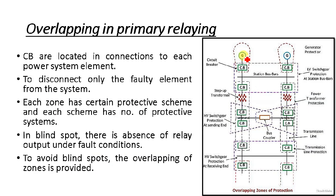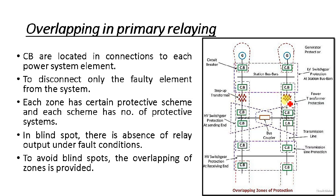Now let us discuss overlapping in the primary line. Here you can see the same diagram but we are dealing with LV switch gear protection at the bus bar, the step-up transformer at the LV side, switch gear and protection at the sending end, and HV switch gear and protection at the receiving end. Circuit breakers are located in the connection to each system element. At each end of the bus bar and transformer, there is a circuit breaker so that any element of the power system can be disconnected.